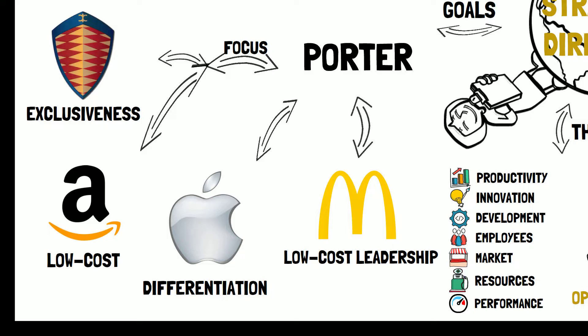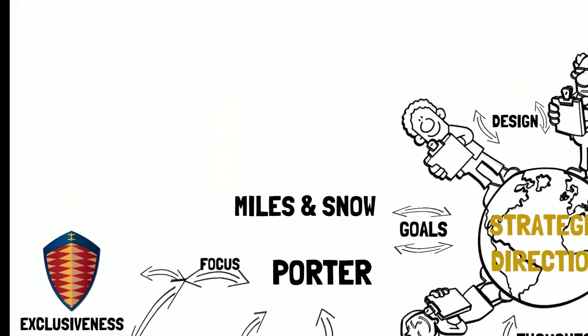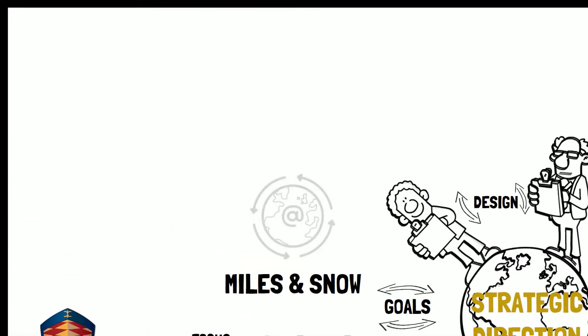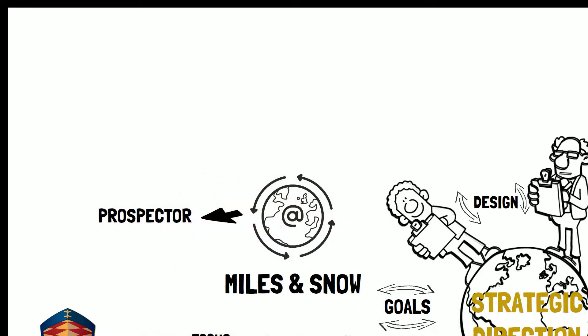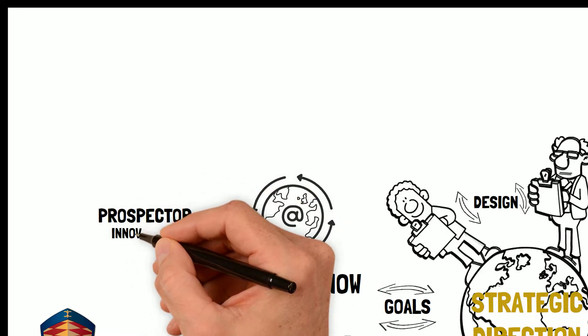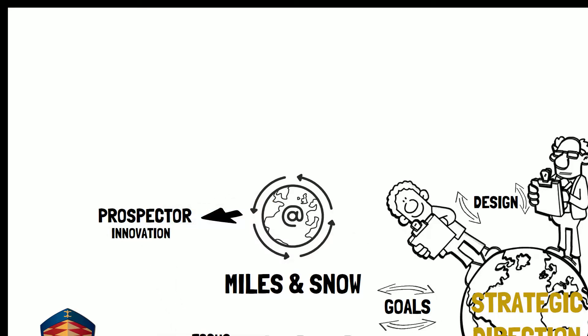The latter, in the Miles and Snow typology here, managers are constantly seeking to find ways of making company strategies fit into and take advantage of the external environment. The model has four different strategies. Prospector: Innovation is focused around companies which prioritize growth and creativity. Tesla, for example, is good at innovating new technologies.